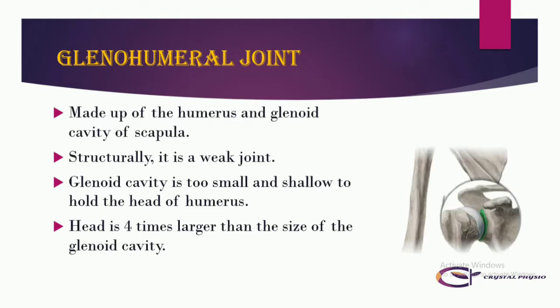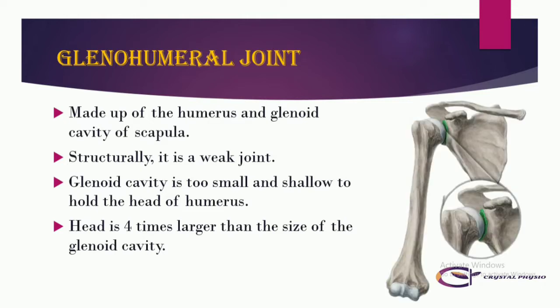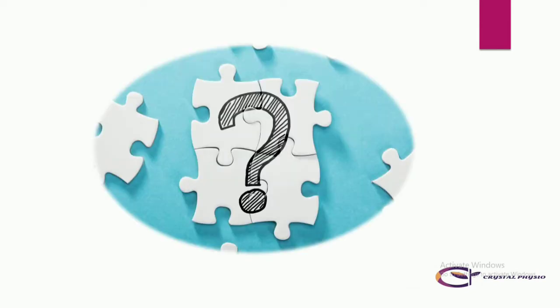The glenohumeral joint is made up of the head of the humerus and the glenoid cavity of the scapula. Structurally it is a weak joint because the glenoid cavity is too small and shallow to hold the head of the humerus, as the head is four times larger than the size of the glenoid cavity. So the chances of shoulder dislocation are increased.